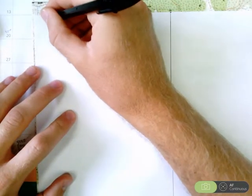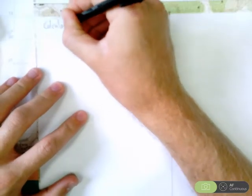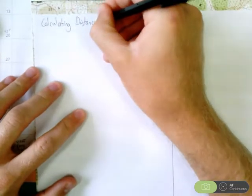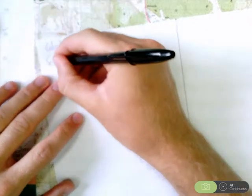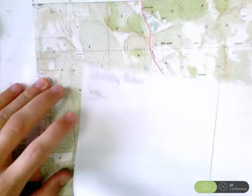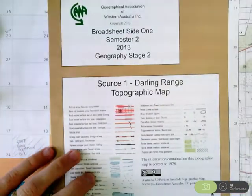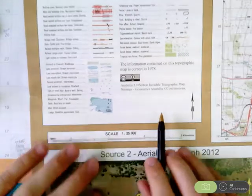When you're calculating distance, the first thing that you need to know is the scale. So this map here from 2013 semester 2 year 11 exam, we see the scale here is 1 to 25,000.